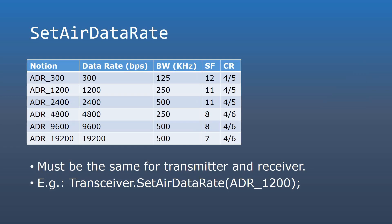In LoRa we have three configurable parameters that affect the data rate: the bandwidth, spreading factor, and coding rate. The eByte E32 transceiver doesn't allow direct parameter configuration, but you can set the data rate and the other parameters will be set accordingly. The sender and receiver should operate on the same bandwidth and spreading factor, therefore you should set the same data rate on both sides.